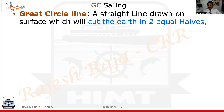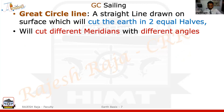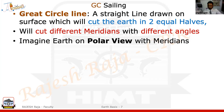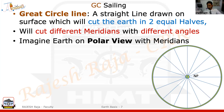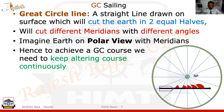Let us look at what is a great circle line. It is a straight line drawn on the surface of the earth, and because it is a great circle, the plane of this line is going to cut the earth into two equal halves. But when it cuts the meridians, it will always cut them at different angles. Looking at a polar view from the north pole, you will see the angles keep changing. So if you want to achieve a GC course, please remember you need to keep altering the course continuously.